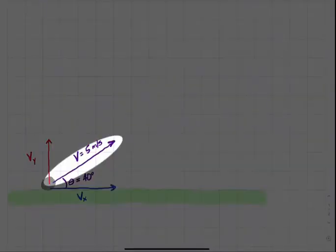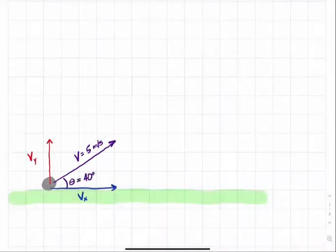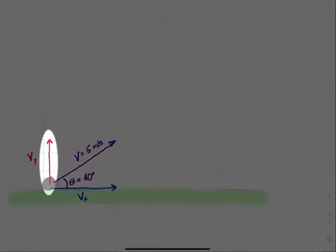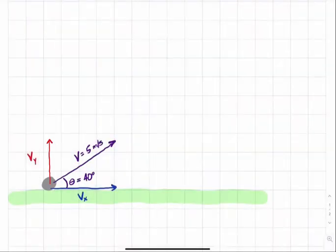So the velocity of this ball is composed of two parts: an x component and a y component. When solving problems involving motion in two dimensions, we'll often consider these two motions separately. Its motion in the x direction occurs independently of the motion in the y direction.